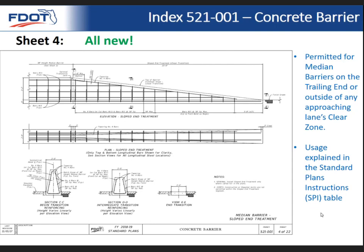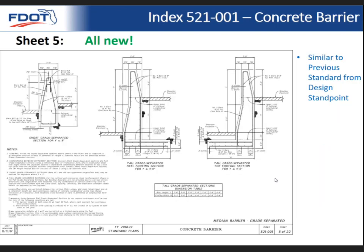Sheet four is for the slope end treatment. This is basically used in medians for median barrier on the trailing ends and outside the clear zone. Any time you have approaching traffic within the clear zone, you want to shield the blunt end with either a guardrail approach terminal or crash cushion — this is just for trailing ends and outside the clear zone. The usage is explained clearly in the new SPI, which has a nice table explaining end treatments for approaching and trailing ends of all barrier types.